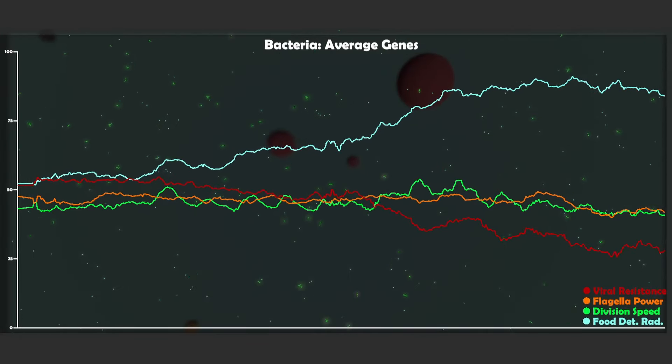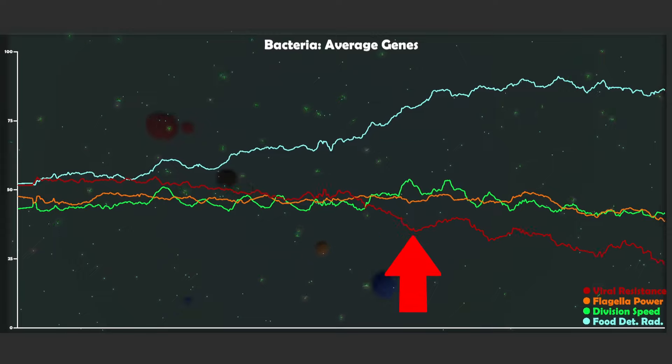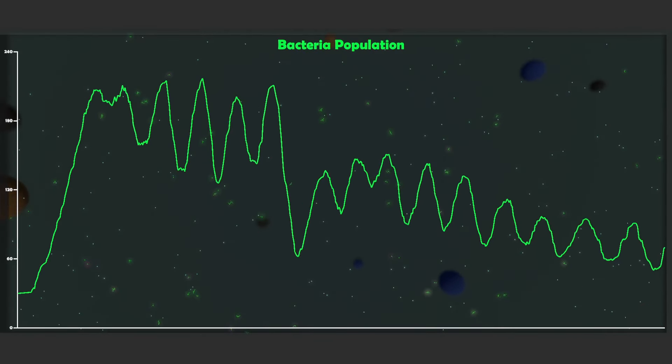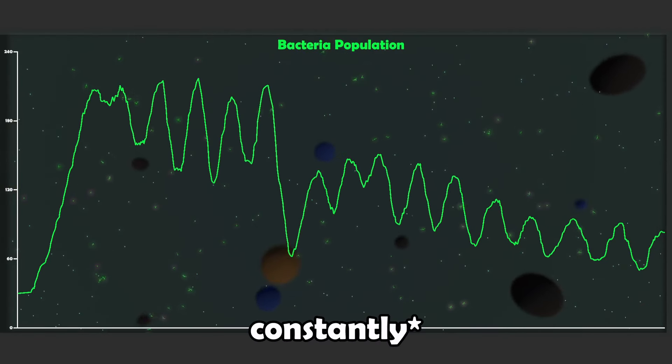And even though it's irrelevant in this simulation, I think it's nice that I kept the viral resistance gene because as you can see that since there are no viruses around, there is really no point having a viral resistance. So the average viral resistance of the population keeps constantly going down.